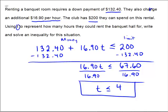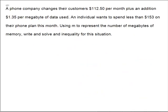So why don't you pause the video and try this next problem on your own? Assuming you gave it a shot, I'll help you out and we'll do it together. A phone company charges their customers $112.50 per month, plus an additional $1.35 per megabyte of data used. An individual wants to spend less than $153 on their phone plan this month. So using M to represent the number of megabytes of memory, write and solve an inequality.